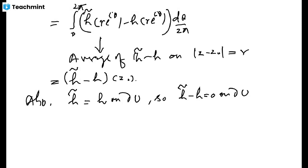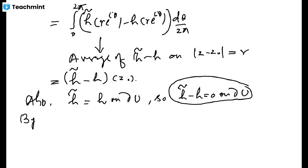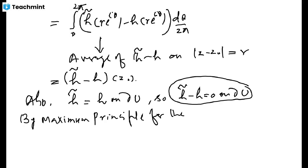We are now convinced that functions satisfying the mean value property do satisfy the maximum principle. Applying the maximum principle: the function (H̃ − H) takes its maximum or minimum on the boundary. Since H̃ − H is zero on the whole boundary, by the maximum principle for functions satisfying the mean value property, it follows that H̃ − H is zero everywhere inside the disk.